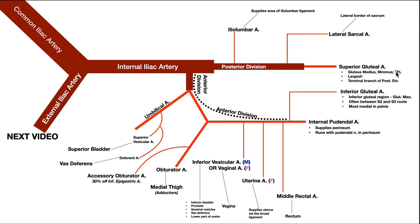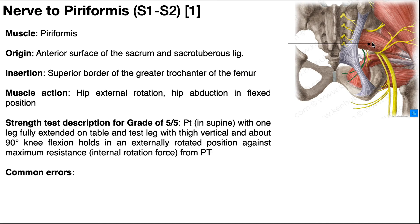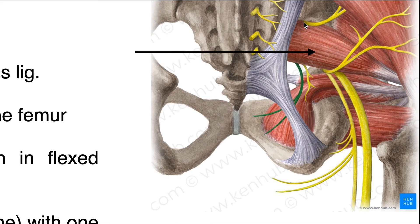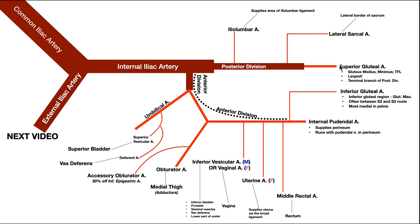The superior gluteal nerve also innervates these three muscles. The way the superior gluteal artery and nerve actually get into the gluteal region is by exiting the greater sciatic foramen and passing over the piriformis muscle. In this picture, piriformis is shown here, and we can see a nerve exiting the greater sciatic foramen — that hole right there — passing superior to piriformis. That's the superior gluteal nerve, and the superior gluteal artery and vein travel right next to it to supply those three muscles.